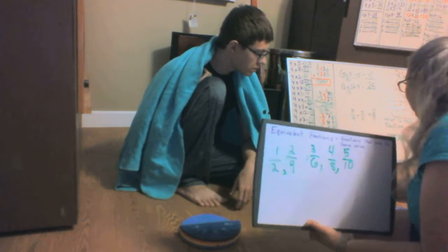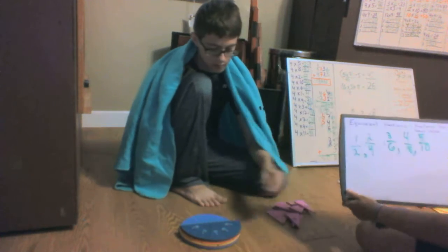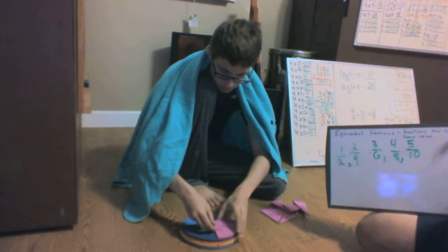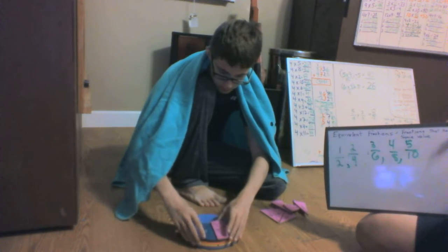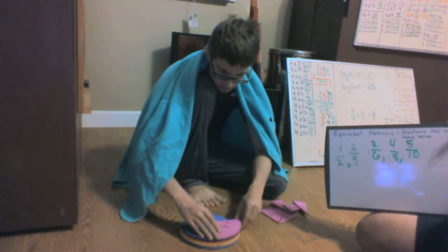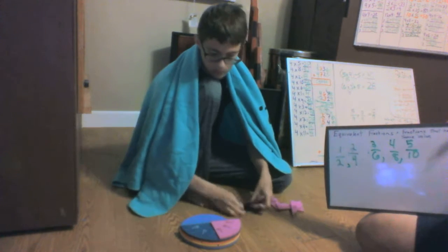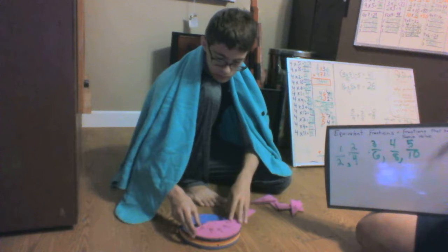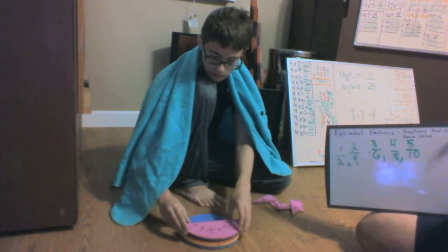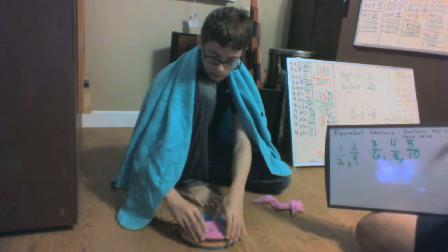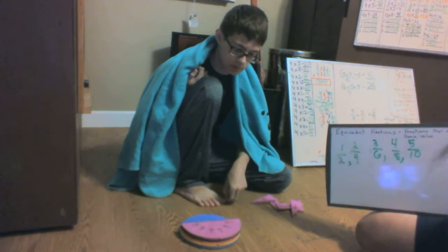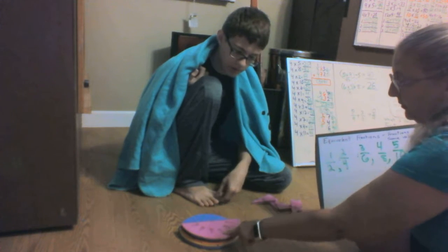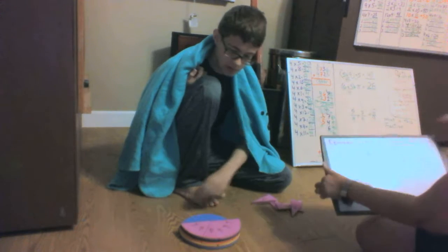Next we have our twelfths. So it looks like twelfths are equivalent to one-half. How many twelfths? Let's count: 1, 2, 3, 4, 5, 6. Six-twelfths.